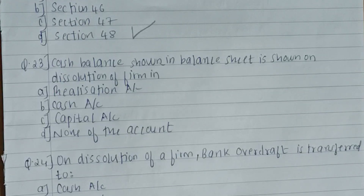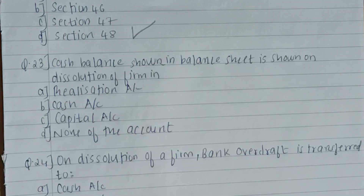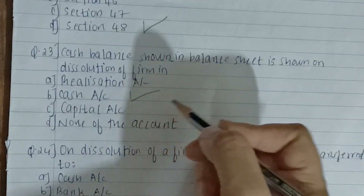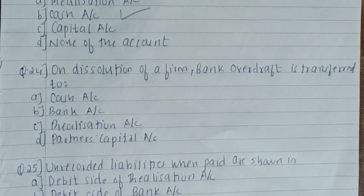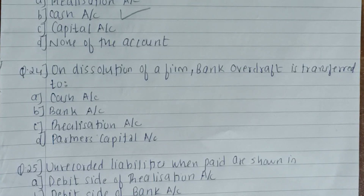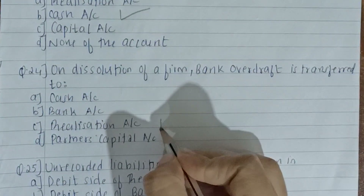Twenty-third question: cash balance shown in the balance sheet is shown on dissolution in which account? Cash balance is always recorded in the cash account — as 'to balance brought down.' The answer is B — cash account. Twenty-fourth question: on dissolution of a firm, bank overdraft is transferred to which account? Bank overdraft is a liability, and all liabilities are transferred to the realization account as sundry liabilities and paid as third-party liabilities. The answer is realization account.